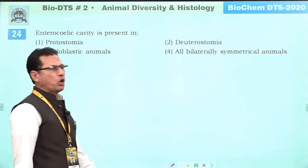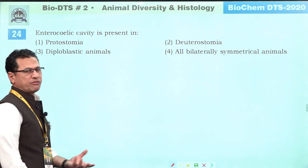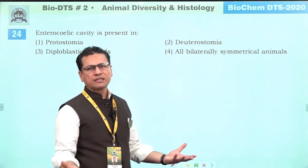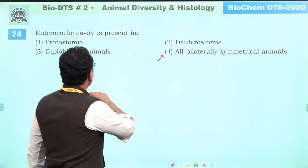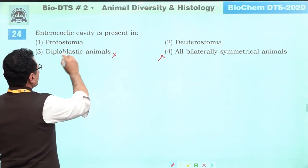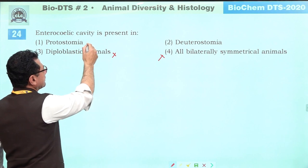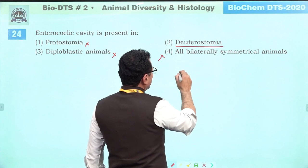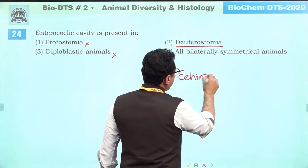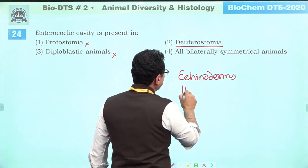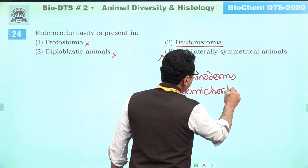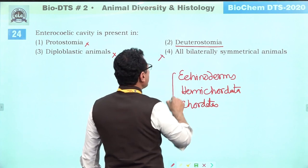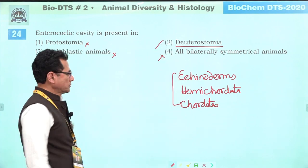Enterocoelic body cavity is a feature of deuterostomes. It is not found in bilaterally symmetrical animals below that level. It is not found in diploblastic animals. Protostomes are simple primitive animals — not present there. Deuterostomes include echinoderms, hemichordates, and all chordates.